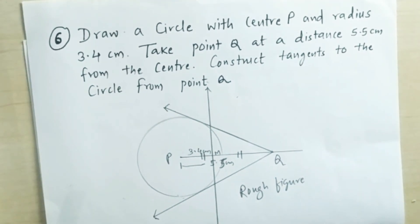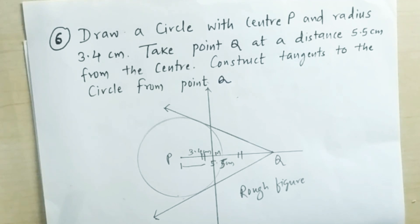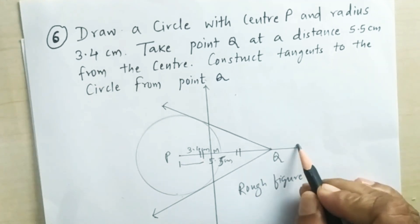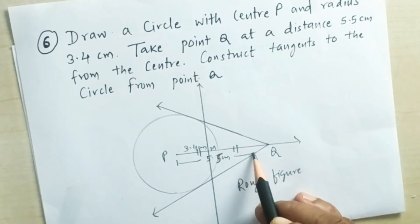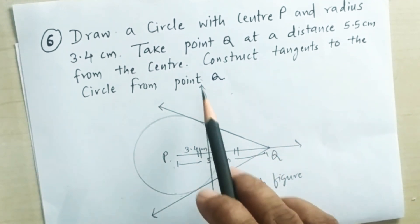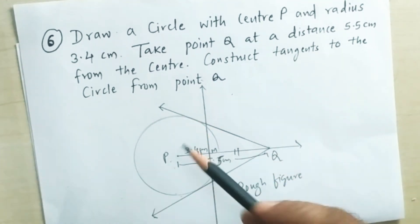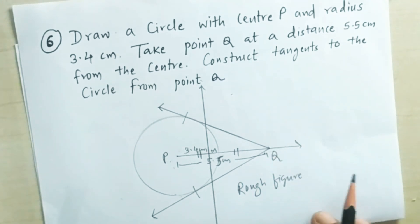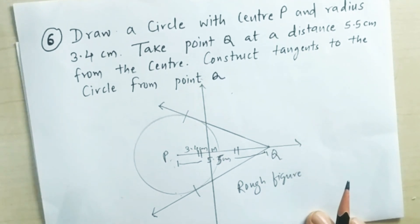Sixth example: draw a circle with center P and radius 3.4 centimeters, take a point Q at a distance of 5.5 centimeters from center P. First draw the circle with center P, then take point Q at a distance of 5.5 centimeters from the center. We will draw the perpendicular bisector of PQ. From the perpendicular bisector we will draw an arc that cuts the circle at two points, and from those points we will draw the tangents passing through Q.